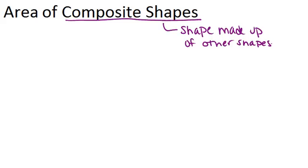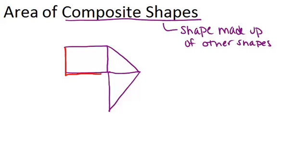But you could break it apart into shapes that you do know. So for example, if we had a rectangle, and attached to that we put a triangle, and down here we put another triangle, this would be a composite shape. If we thought about this shape not as three shapes put together, but just as this shape, this would be a composite shape.